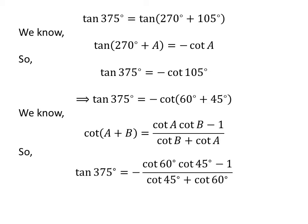Applying the above identity gives us: tangent of 375 degrees is equal to minus cotangent of 60 degrees times cotangent of 45 degrees minus 1, upon cotangent of 45 degrees plus cotangent of 60 degrees.